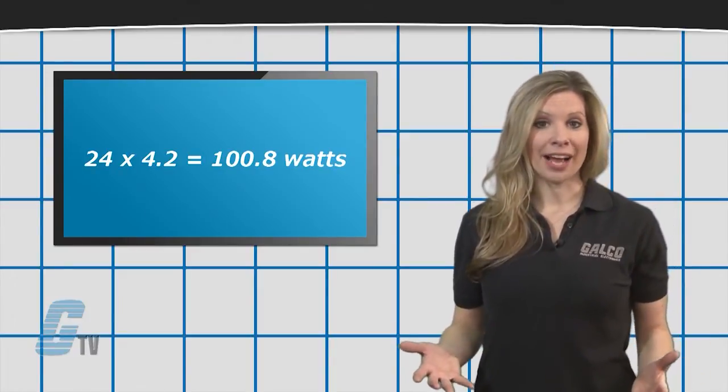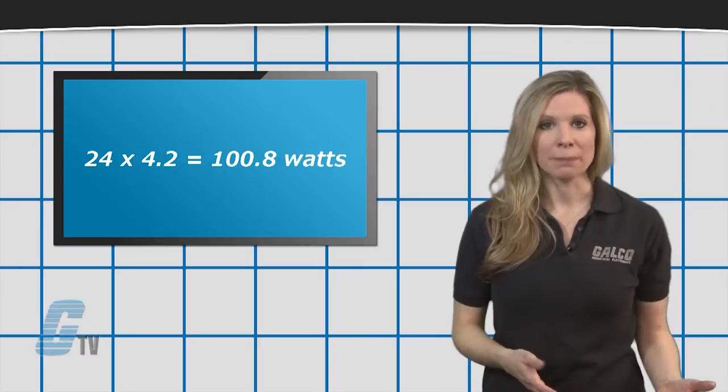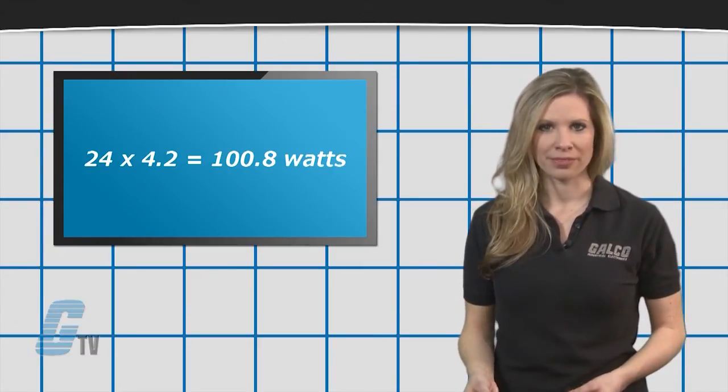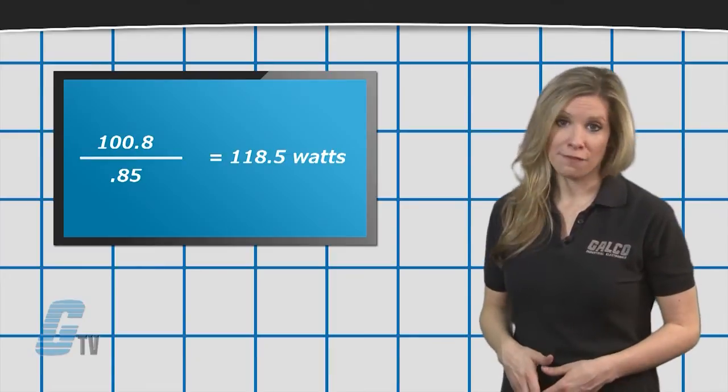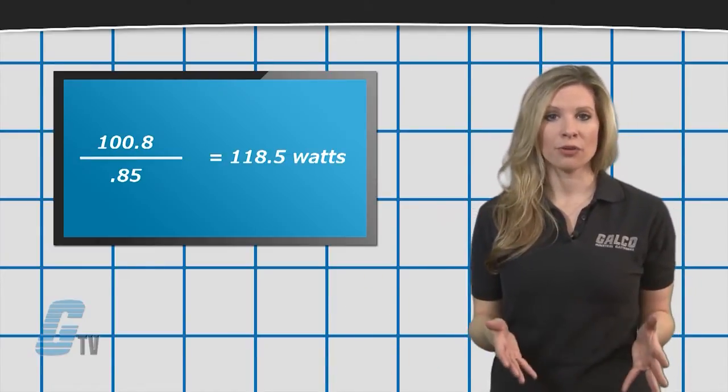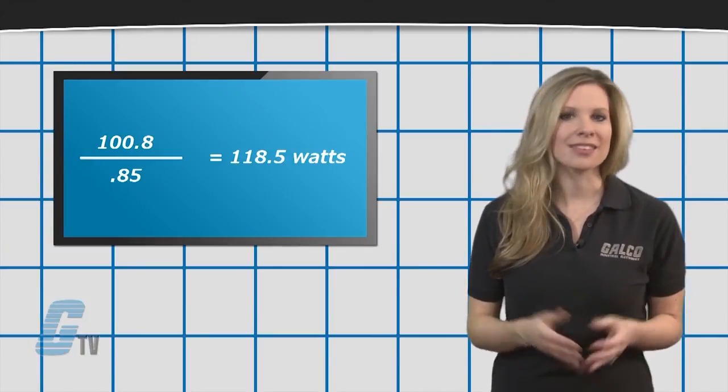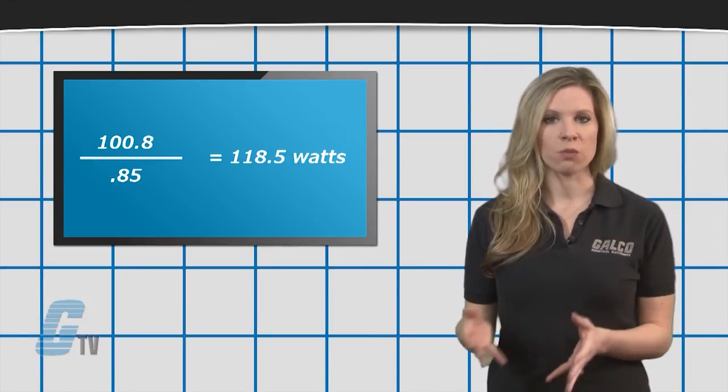Then I will need to find my effective input power by dividing the output power by the typical efficiency. If my efficiency were 85% and the output power is 100.8 watts, then my effective input power is 118.5 watts.